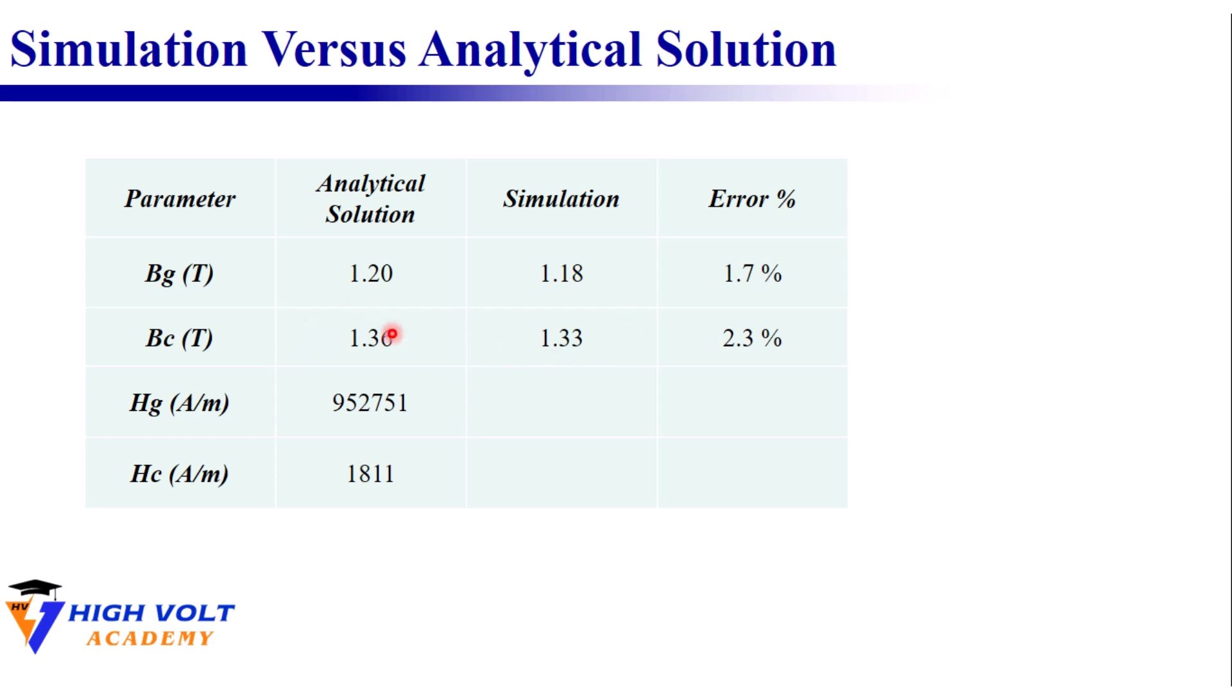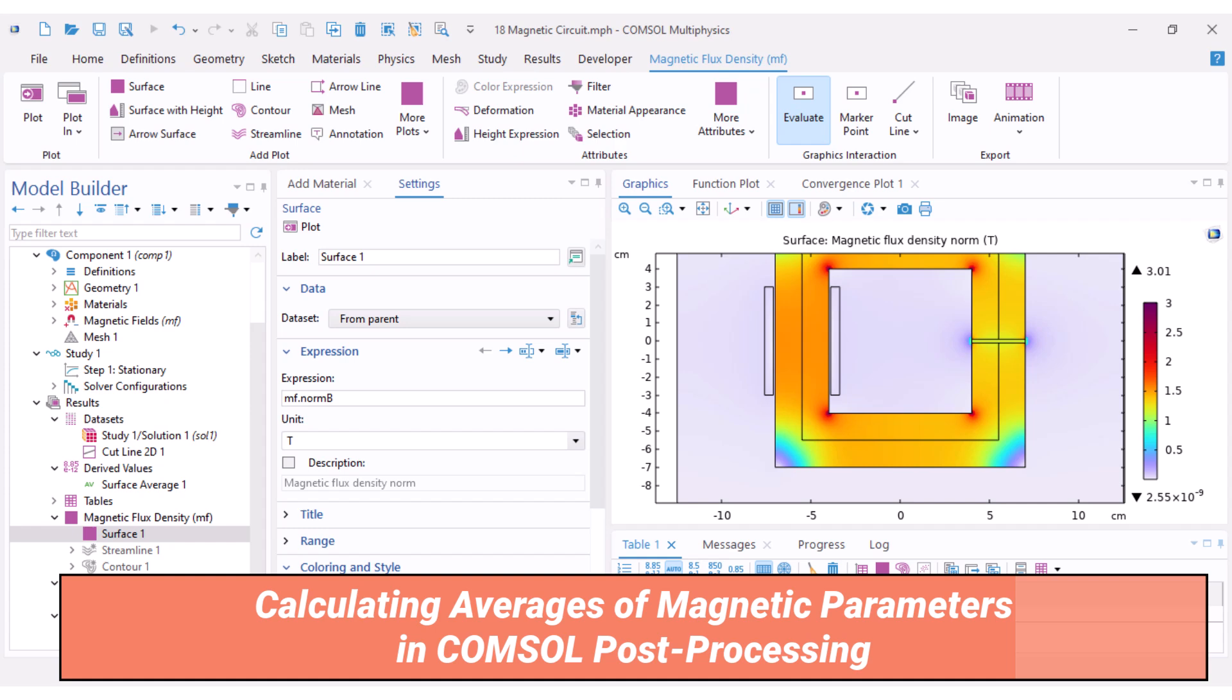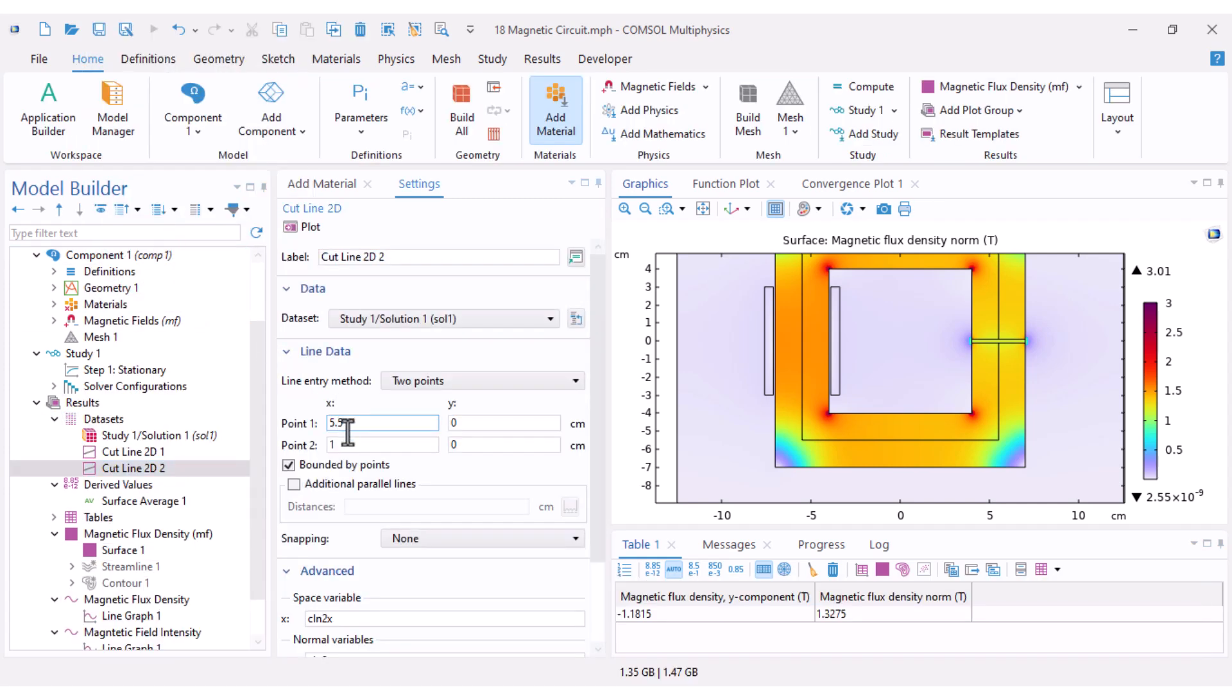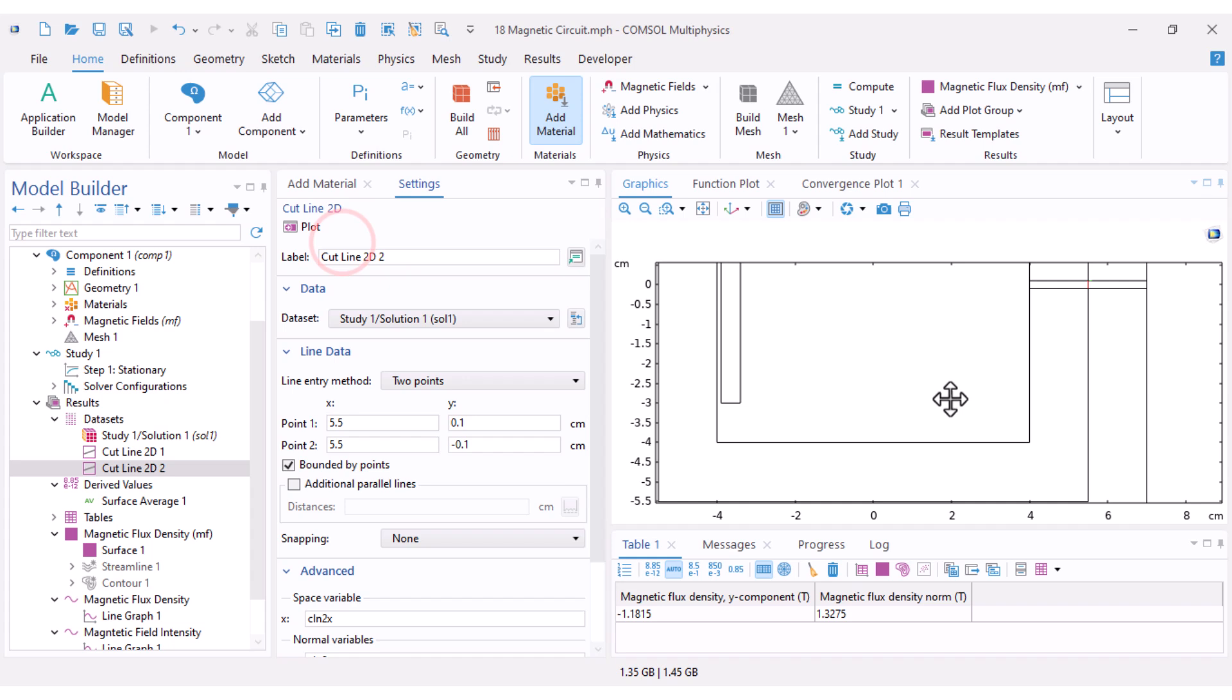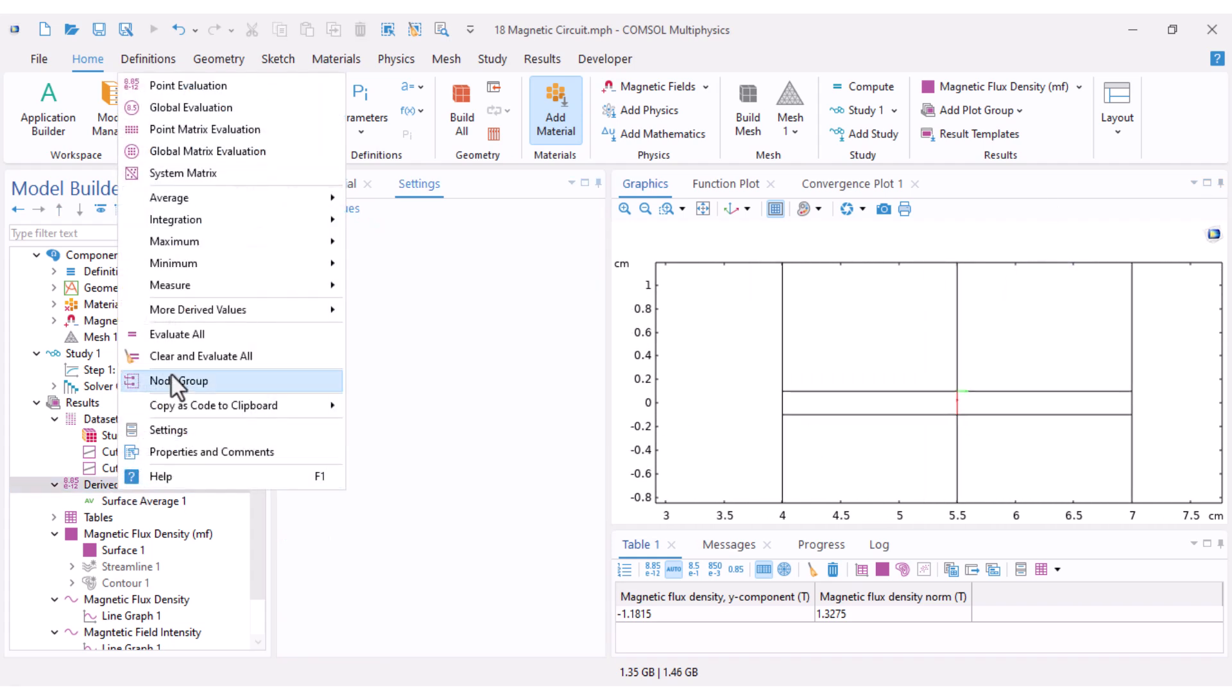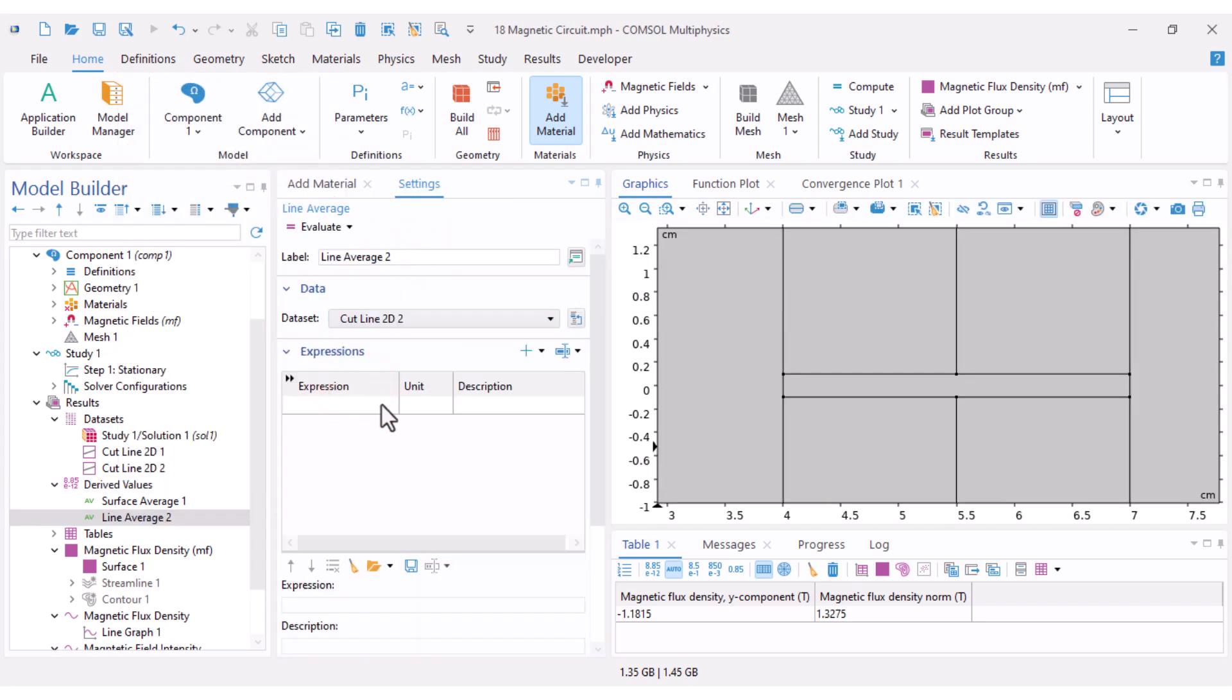Next I'll compare the magnetic field strength. I define another cut line. I set x to 5.5 from 1 millimeter to -1 millimeter which is here on the air gap. Then I right click Derived Values and find Line Average.